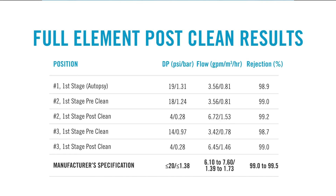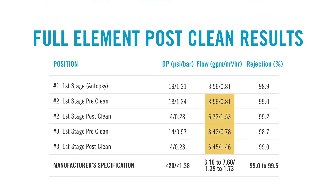When we cleaned these elements with RoClean P903 at 2% for one hour, we saw the delta pressures drop dramatically from 18 and 14 to 4. If you'll remember from the beginning of this presentation, we expect new clean elements to be performing between 3 and 5 psi. So this element has been restored to its baseline performance. Additionally, the flows have increased from around half of normal to normal, and the rejections have improved. This was a successful clean.